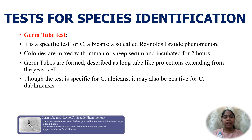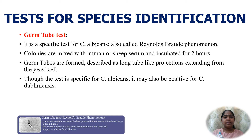Other tests include the Dalmau plate culture on cornmeal agar, which can provide clues for species identification. Candida albicans produces thick-walled chlamydospores. On chromagar, different Candida species produce different colored colonies. Growth at 45°C differentiates C. albicans from C. dubliniensis — C. dubliniensis does not grow while C. albicans grows. Sugar fermentation and sugar assimilation tests can differentiate between various species, and molecular methods such as PCR using species-specific primers are also useful.